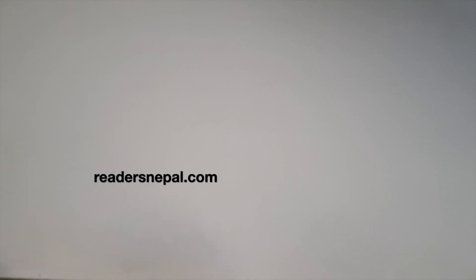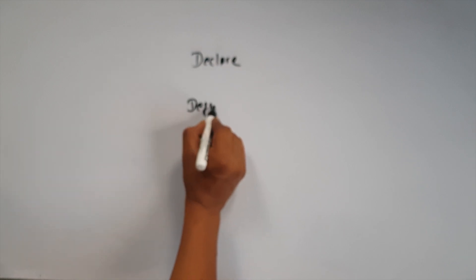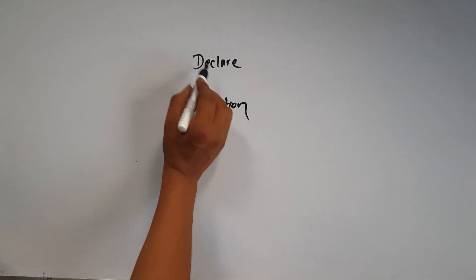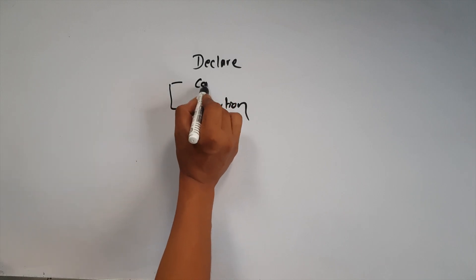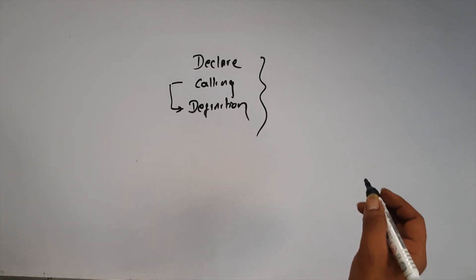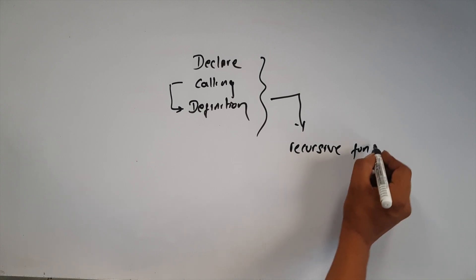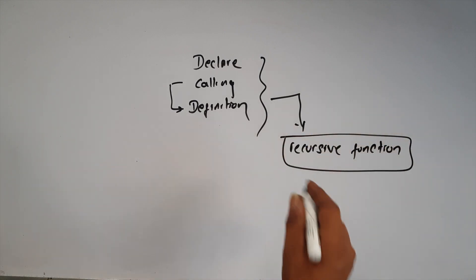Welcome back to another video on C programming. Last time in the video, we had a brief idea of functions. We had a quick revision — we had to declare the function, declare the definition, declare a calling statement, and look at arguments. We also had a program example. This topic is related to the recursive function, which I would like to show you in this video.